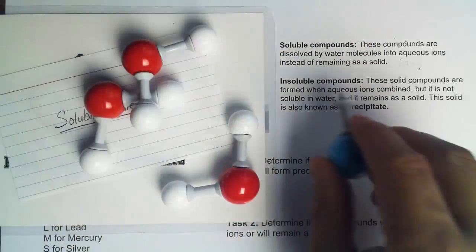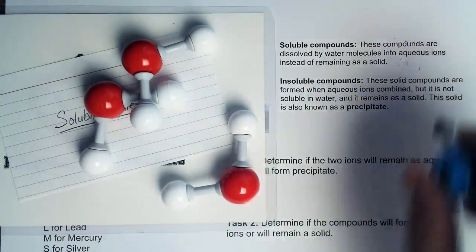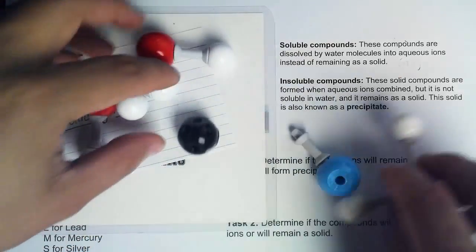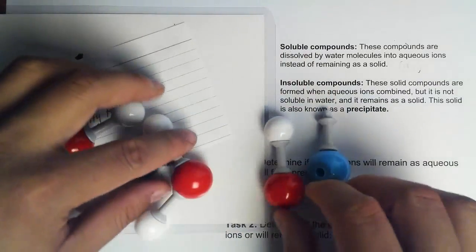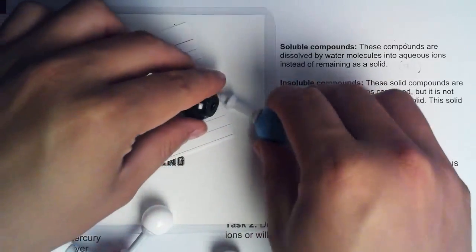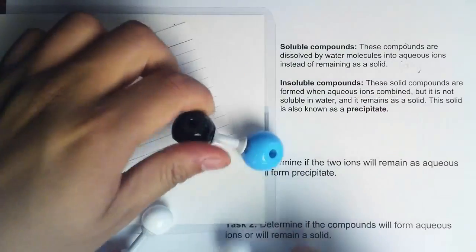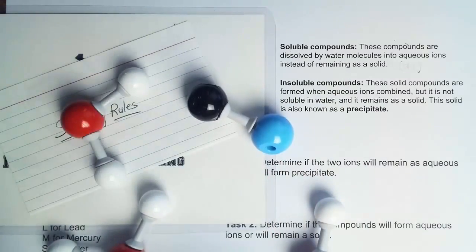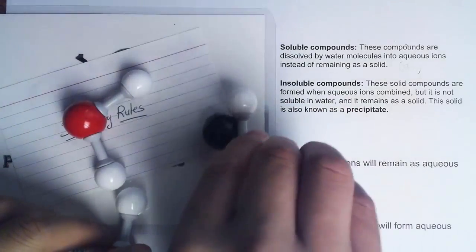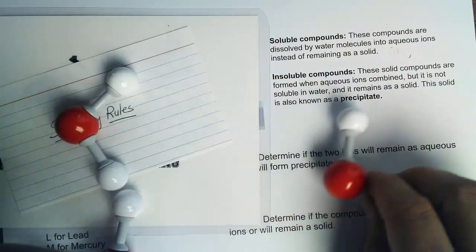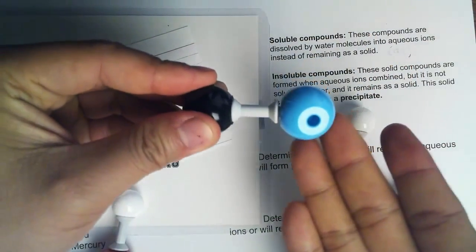Where a compound is insoluble, it remains as a solid. Sometimes when ions are being separated by water molecules, the attractive force between the two charges is so strong that it separates the water molecules and the compound becomes a solid. The electrostatic force — the ionic bond specifically — is so strong that water molecules cannot break it, and this will become a precipitate. A precipitate is basically a solid in a solution.